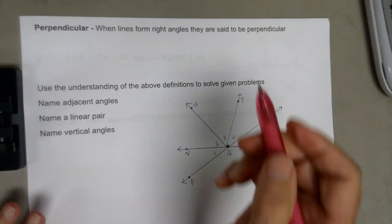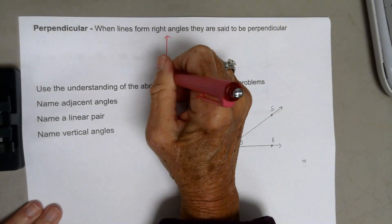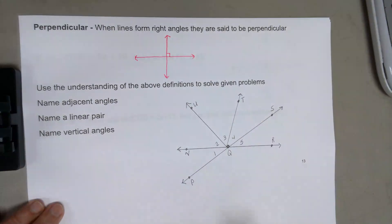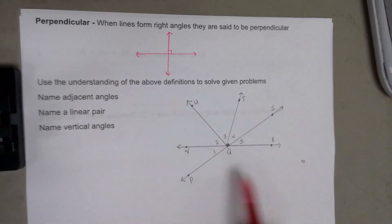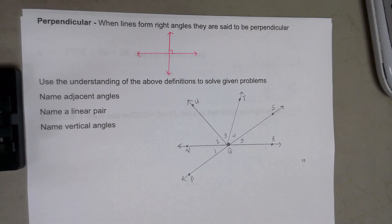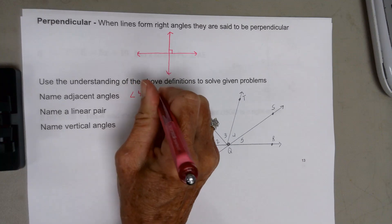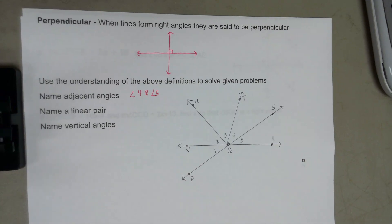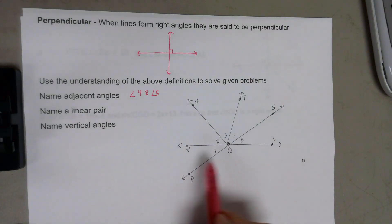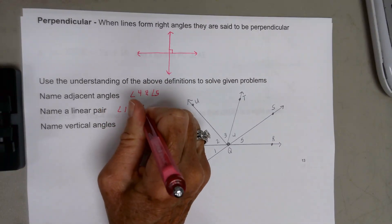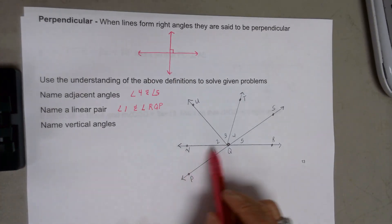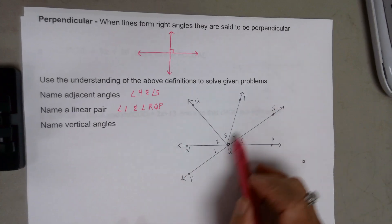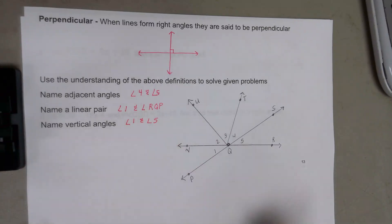Perpendicular lines are lines that form a right angle when they cross — they intersect and form four right angles. Using these definitions to solve problems: if asked to name a pair of adjacent angles, angle 4 and angle 5 would work. A linear pair would form a straight line. Vertical angles are formed by intersecting lines — angle 1 and angle 5 would be vertical angles.